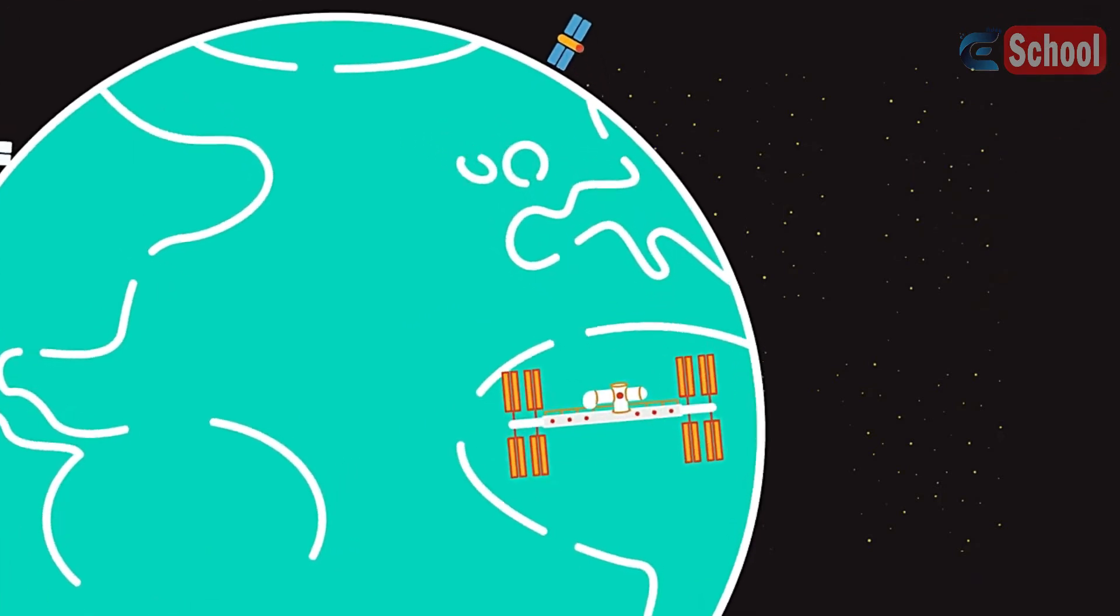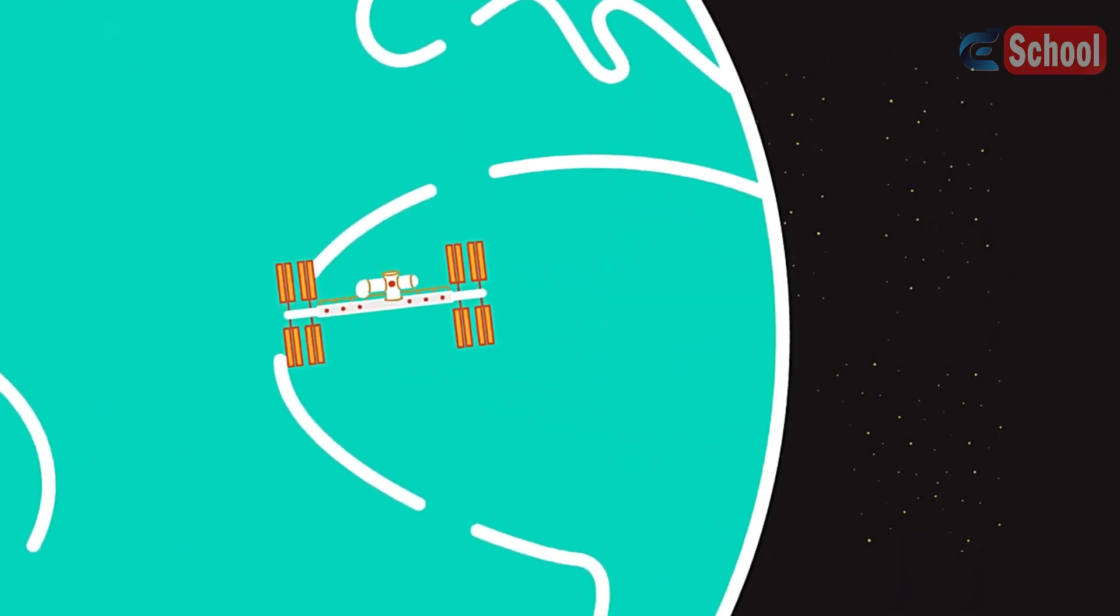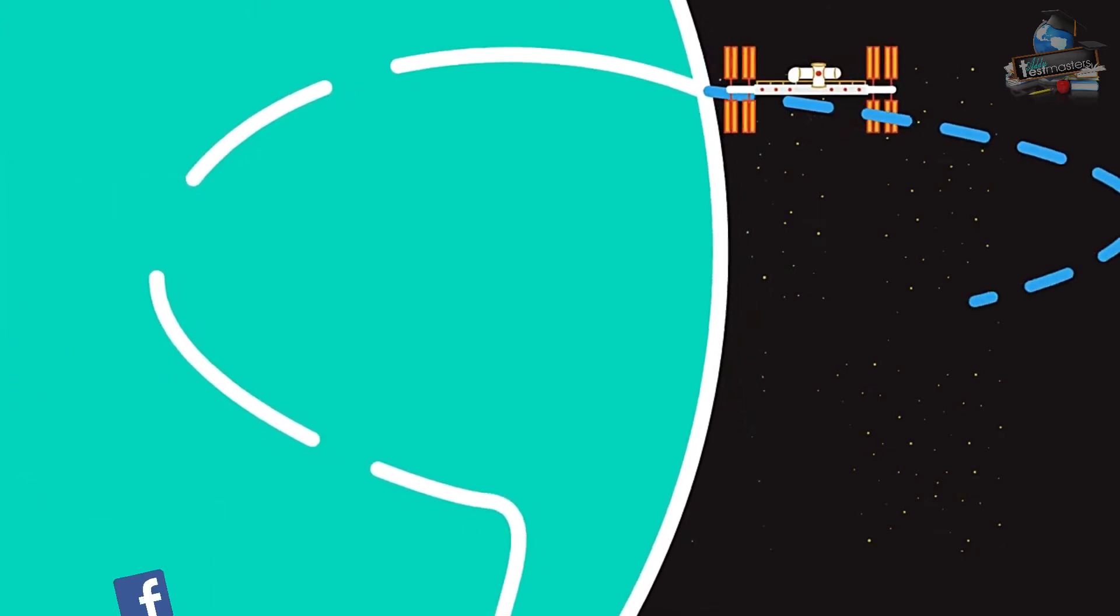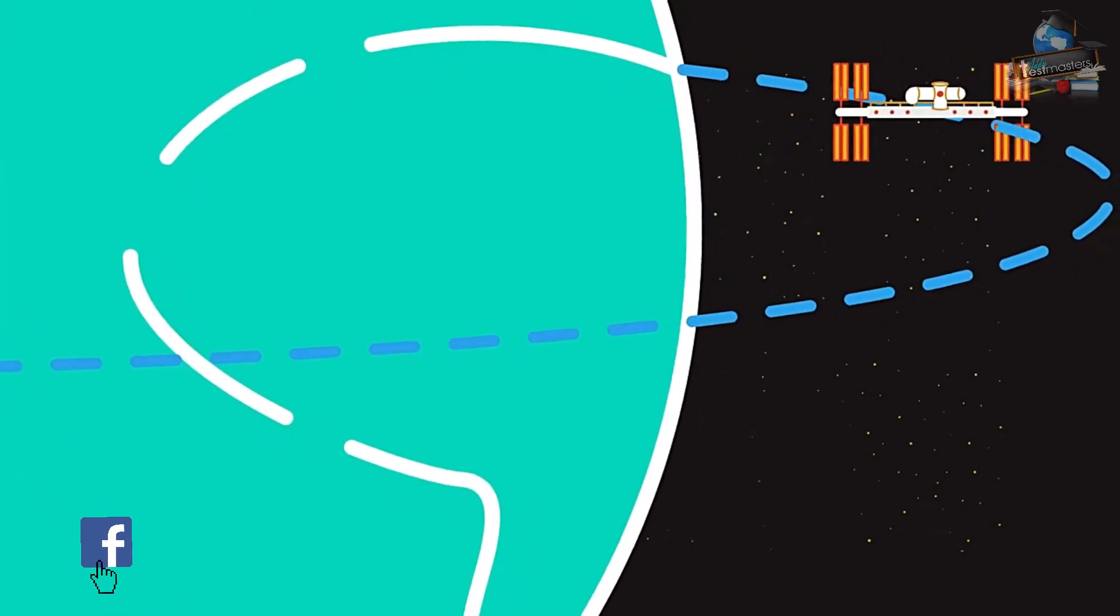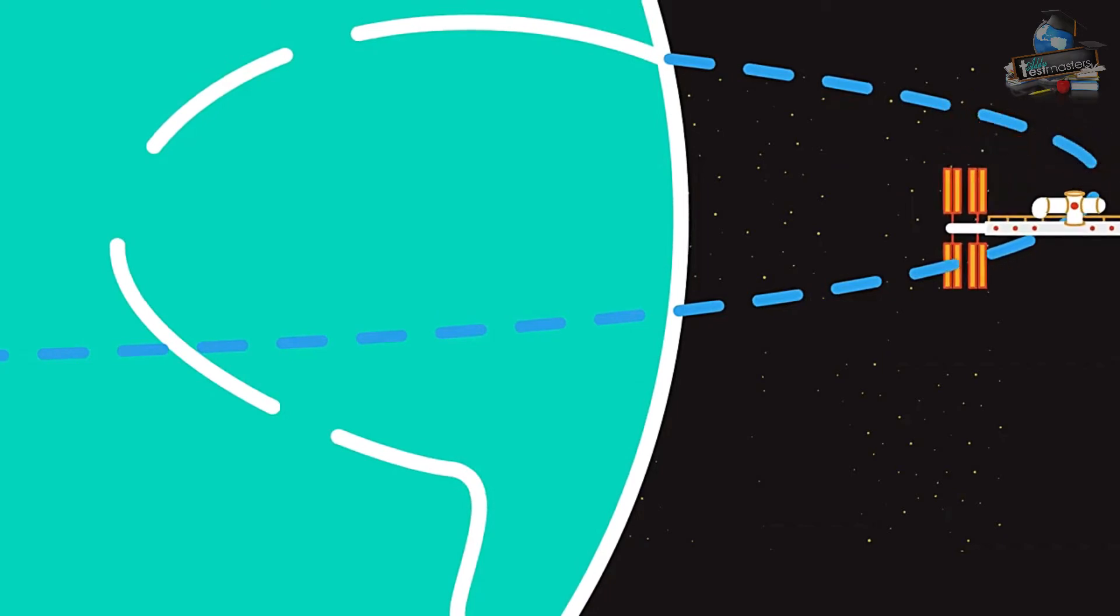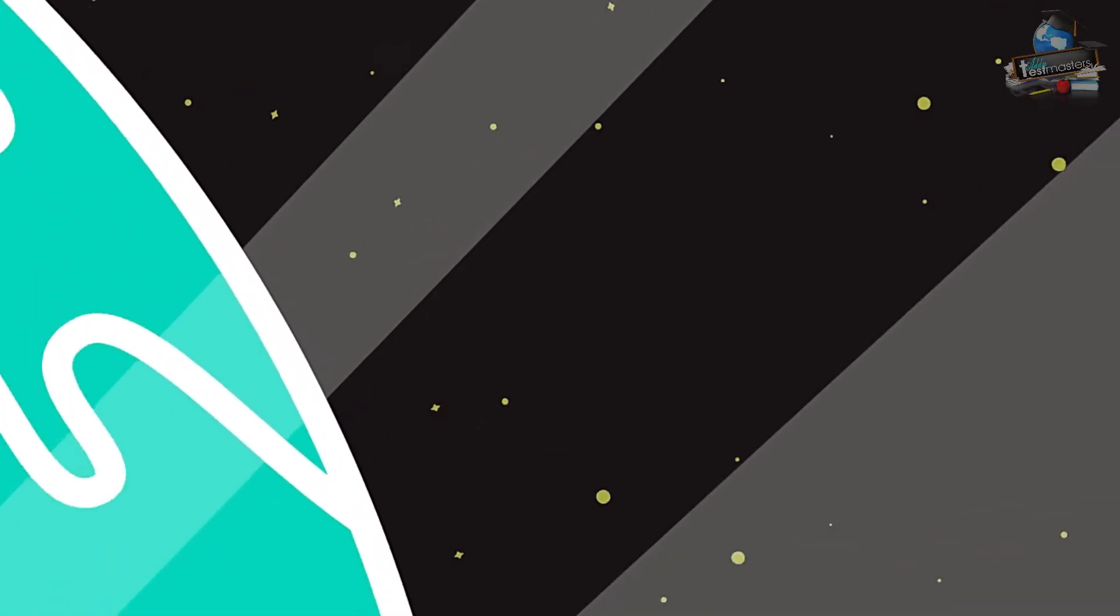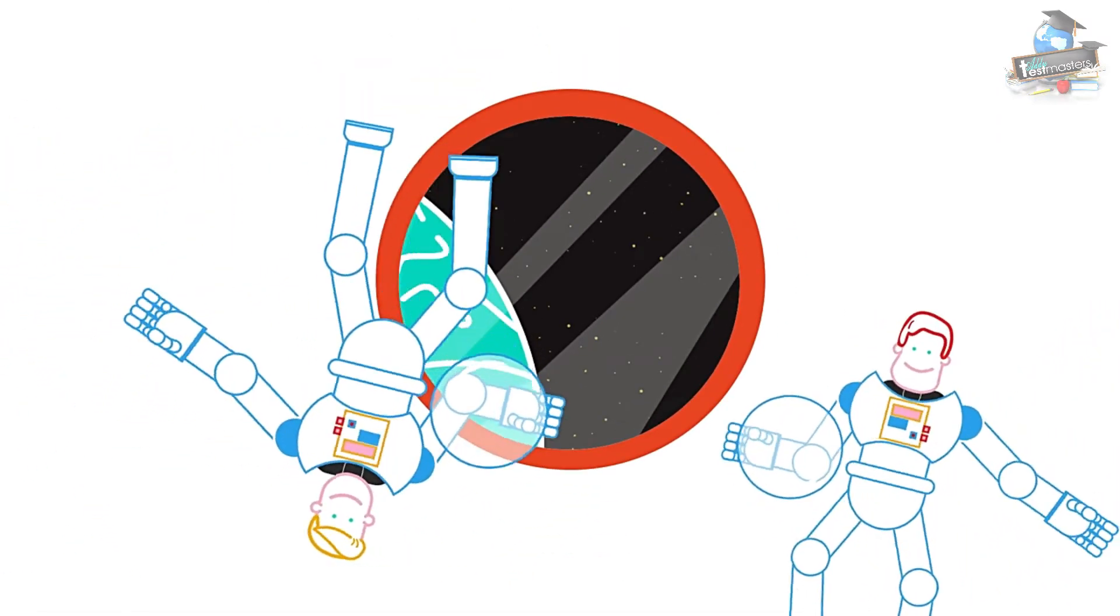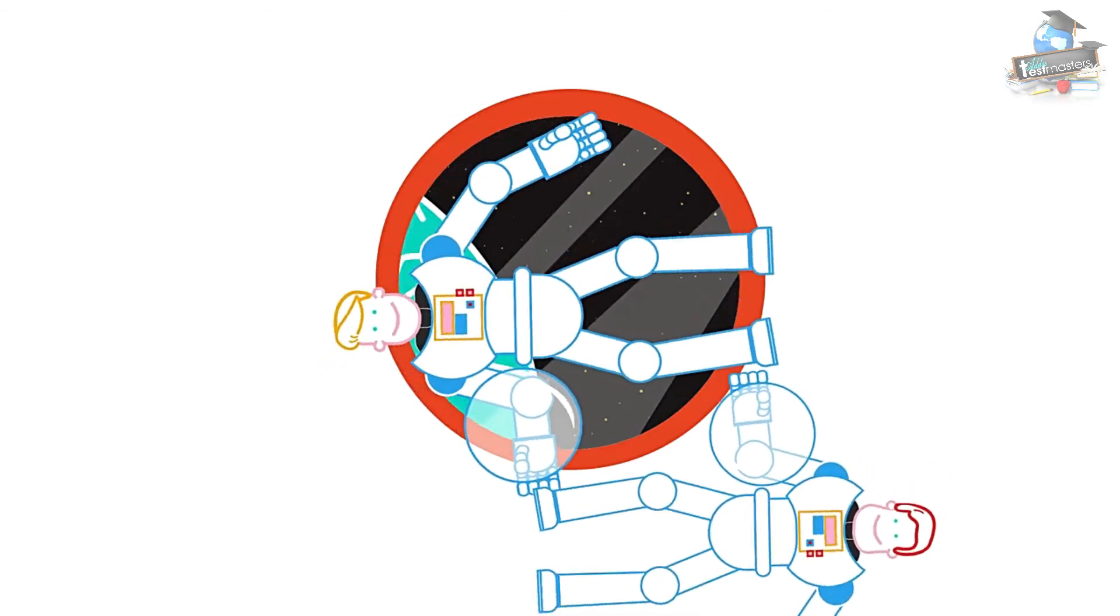If the space station were not moving, it would fall straight down towards the center of the Earth. In an orbit, it is constantly in a free fall as it constantly bends round in its orbit. All the objects and people in the space station are falling together, and so relative to each other they are weightless.